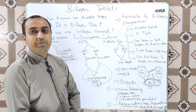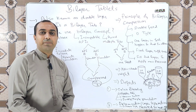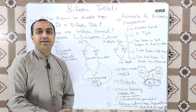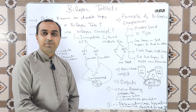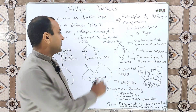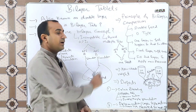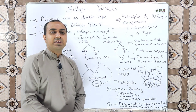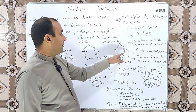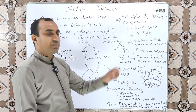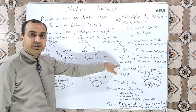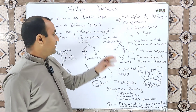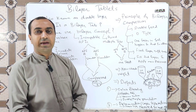Another reason to use bilayer tablets is to avoid multiple tablet intake. We use the bilayer concept to combine two APIs into a single tablet, so the patient can take one tablet instead of two — instead of taking a tablet for API A separately and API B separately, the patient takes a single double layer tablet and gets the effect of both APIs.